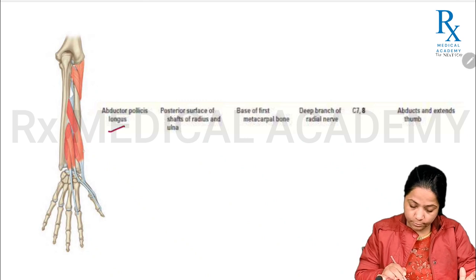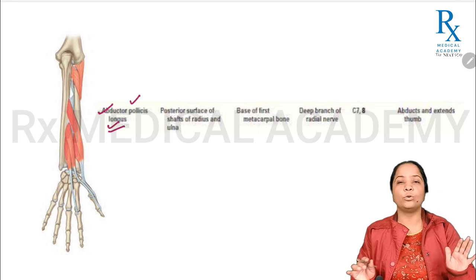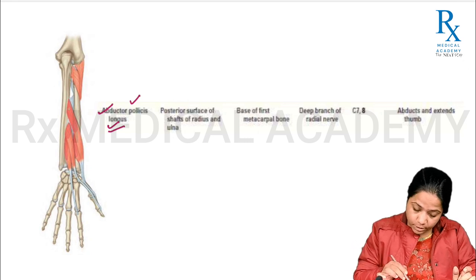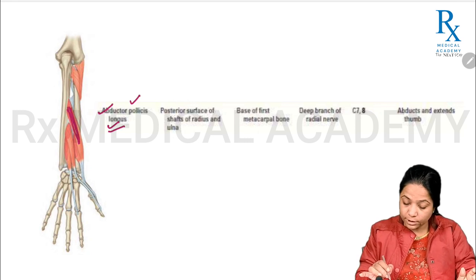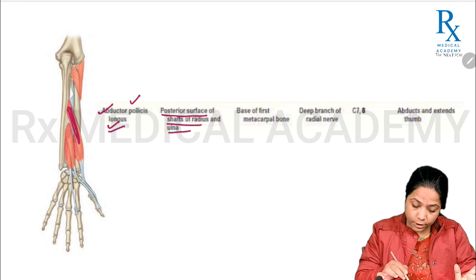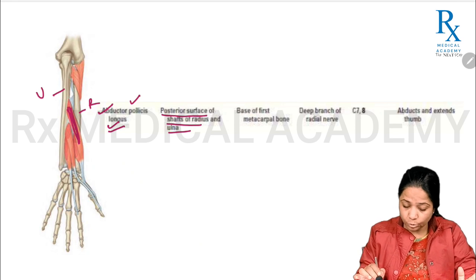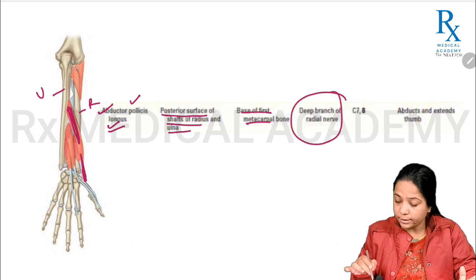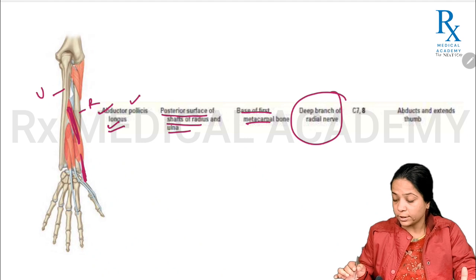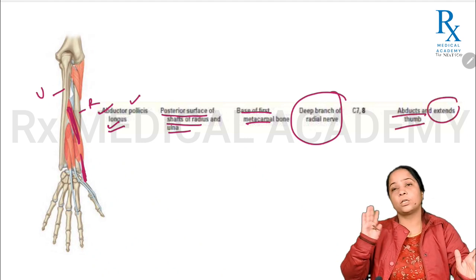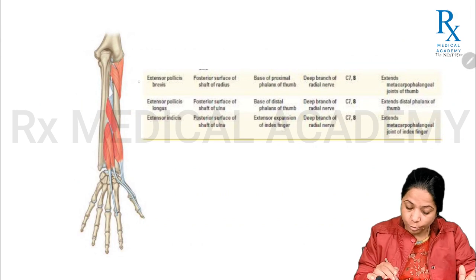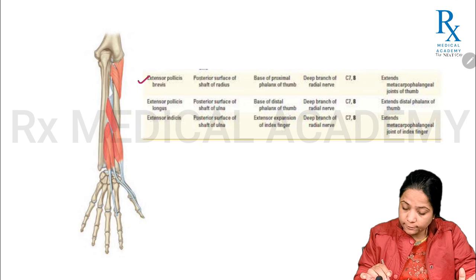Abductor pollicis longus arises from the posterior surface of the shaft of the radius and inserts onto the base of the first metacarpal, as seen in this diagram. It is supplied by the deep branch of the radial nerve. As the name suggests, it causes abduction of the thumb, and because it is in the posterior compartment it also produces extension of the thumb.